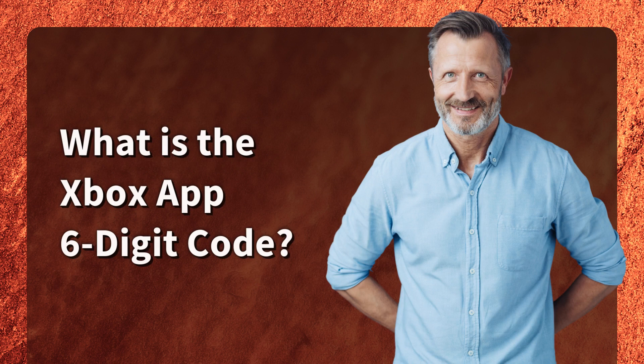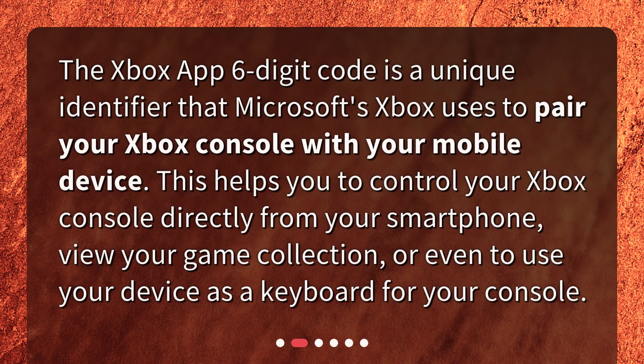What is the Xbox app six-digit code? The Xbox app six-digit code is a unique identifier that Microsoft's Xbox uses to pair your Xbox console with your mobile device. This helps you to control your Xbox console directly from your smartphone, view your game collection, or even to use your device as a keyboard for your console.